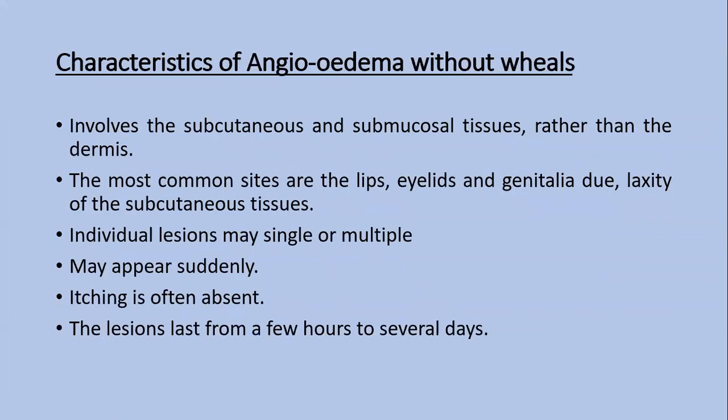Characteristics of angioedema without wheals: it involves subcutaneous and submucosal tissue rather than the dermis. The most common sites are lips, eyelids, and genitals due to laxity of subcutaneous tissue. Individual lesions can be single or multiple, appear suddenly, itching is absent, and lesions last from a few hours to several days.